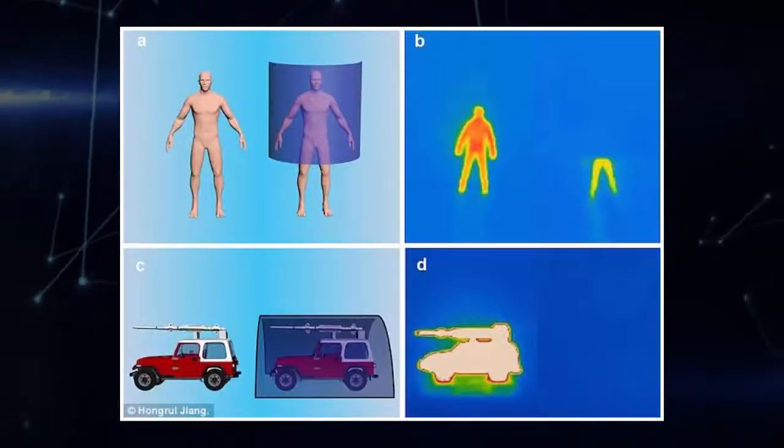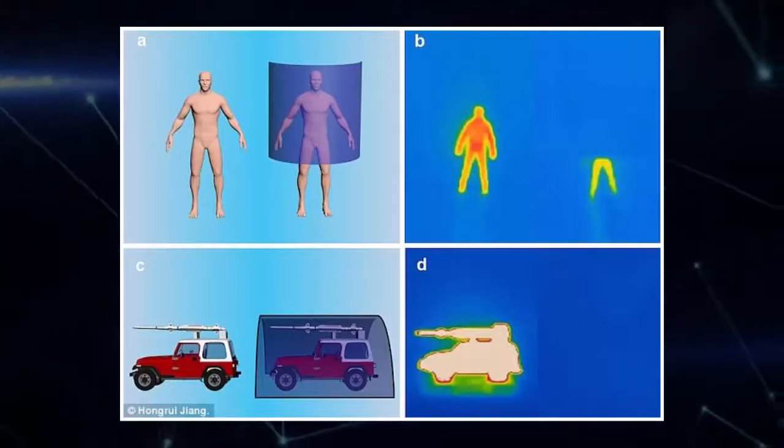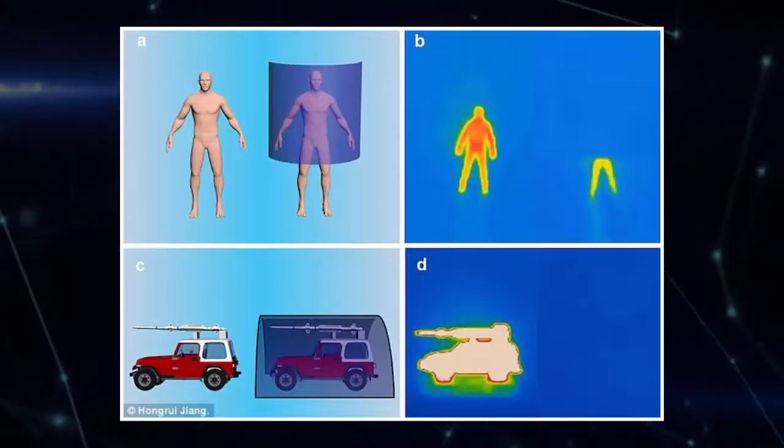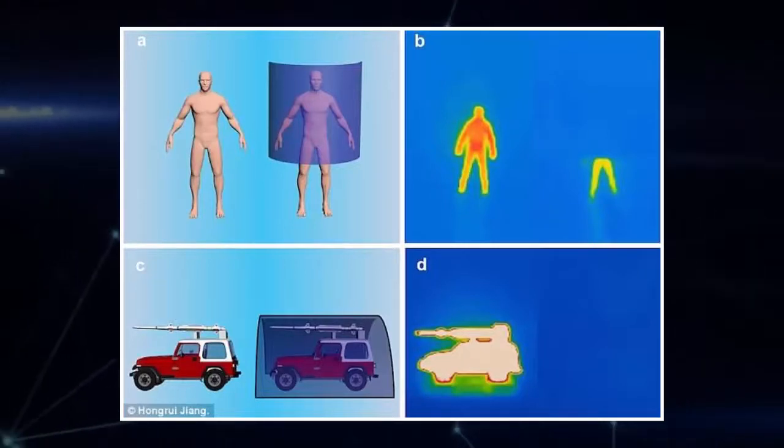A team of researchers have developed a device that can make soldiers and vehicles disappear. Called the Stealth Sheet, it's a paper-thin device that can obscure objects from being detected by a drone's infrared cameras.